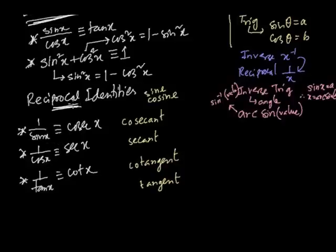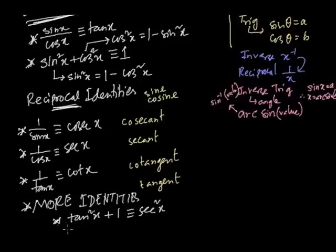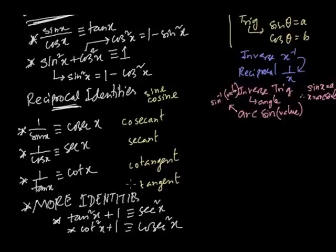There are two more identities to pay attention to — these are ones you usually have to prove. One of them is: tan squared x plus 1 is identical to sec squared x. Another is: cot squared x plus 1 is identical to cosec squared x. These two identities are not encountered very regularly, but they are important.